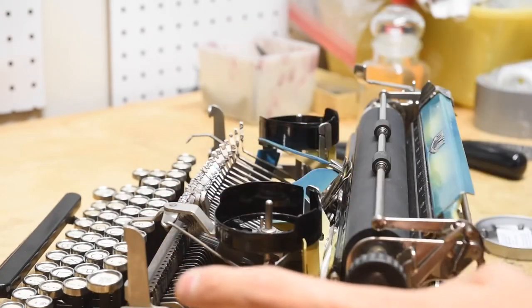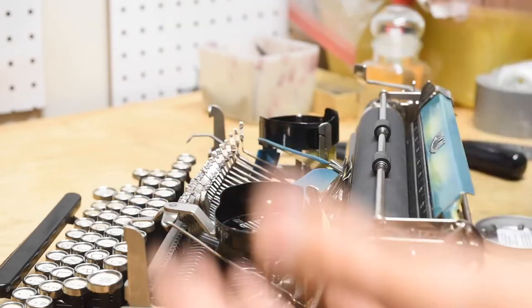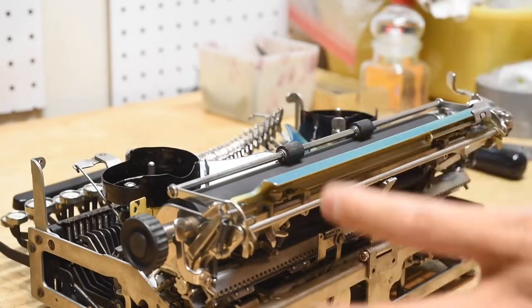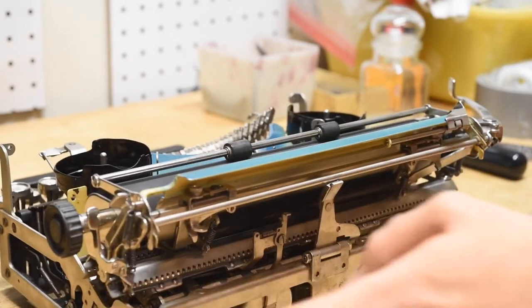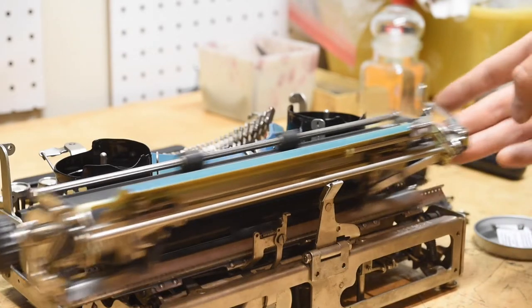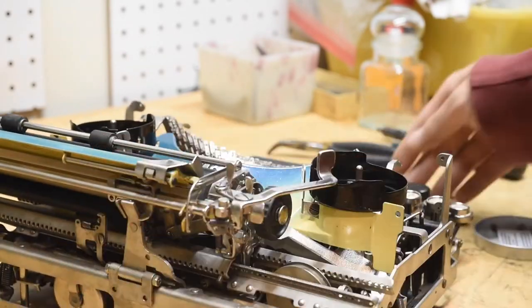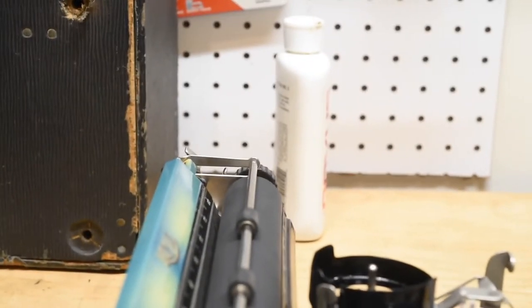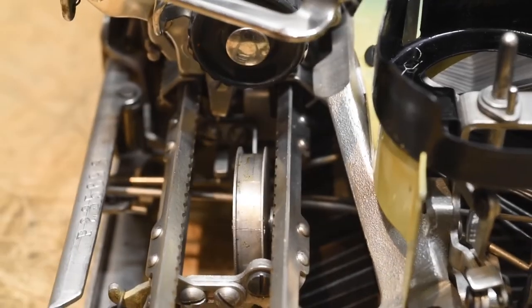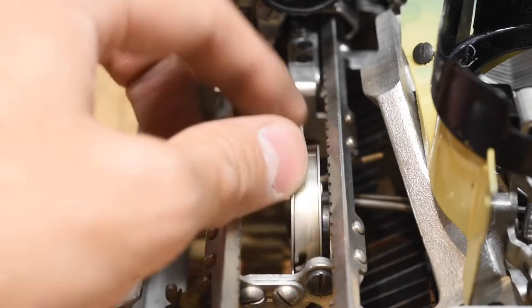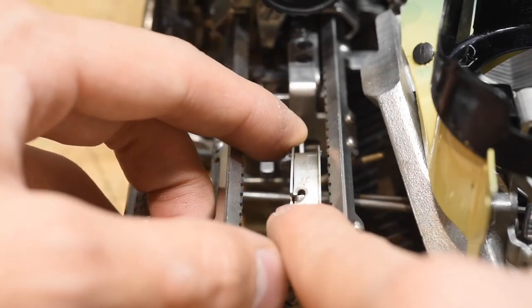Now, just to preface this once more, this is not specifically just the Royal P, but this is a good general idea on how most draw bands get attached to a typewriter. Generally, most Royal typewriters are all pretty much the same. So I'm going to bring the camera over here now. We're going to look down at the left side of the machine, and we can notice that the mainspring is nice and prominent there.